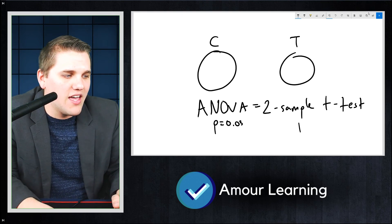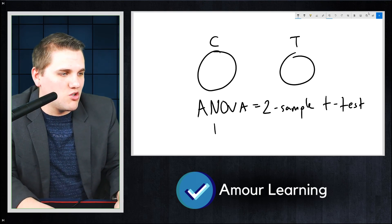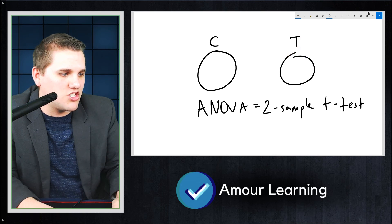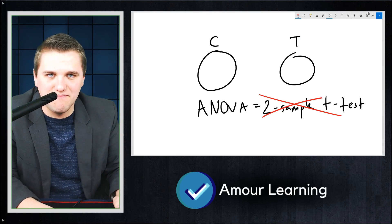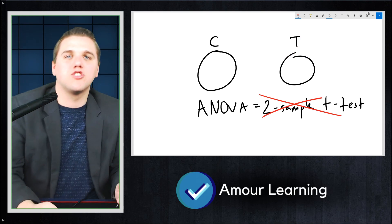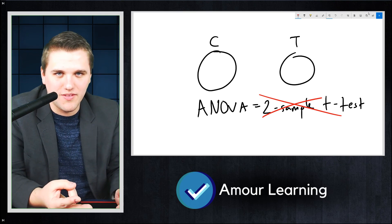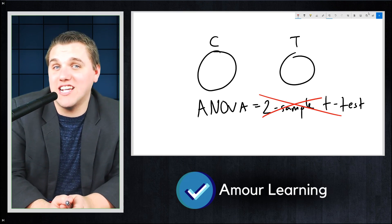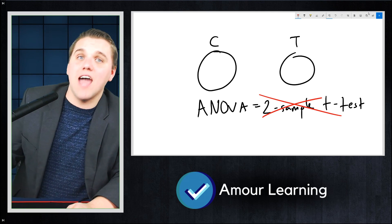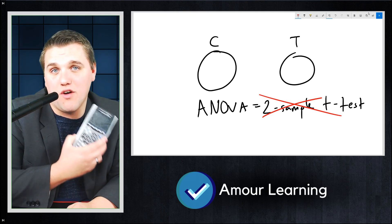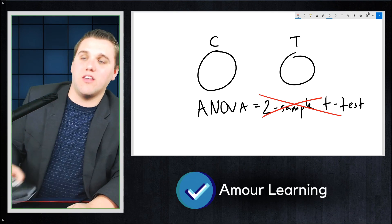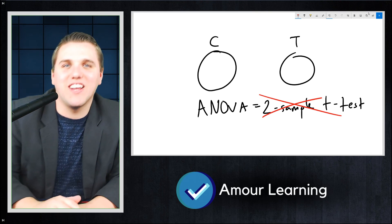In a way, you really didn't need to learn the two-sample t-test because the ANOVA is just a generalized version of that that works for any number of samples so long as you have at least two samples. In the next lecture, we're going to go over an example of the ANOVA test, and we're going to talk about how to conduct an ANOVA test on your calculator. Thank you guys so much, and I'll see you in the next lecture.